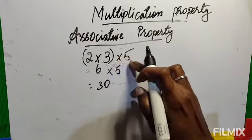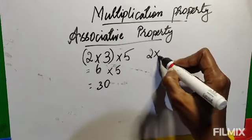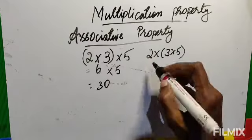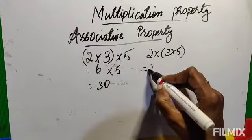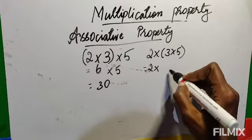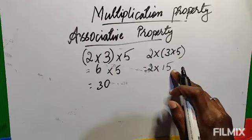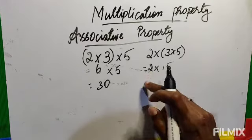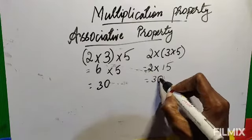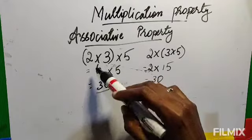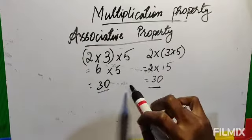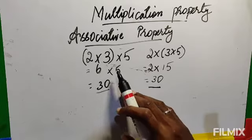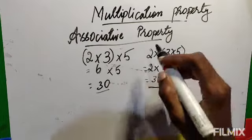Now I make the second and third numbers another group, leaving the first number single. Whatever is grouped, you multiply that first. So I write 2 as it is, and inside the bracket three fives are fifteen. Then two fifteens are thirty. Here the group is different, here the group is different, but the product is the same — thirty. So this is called associative property. When you make the numbers into different groups, the product doesn't change.